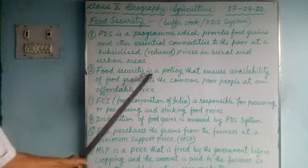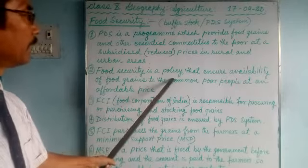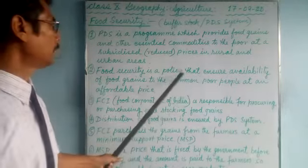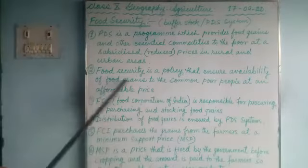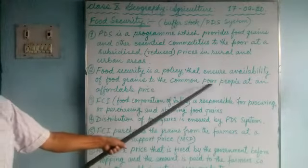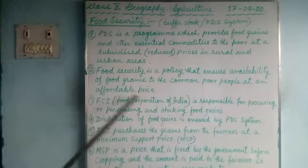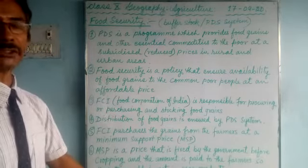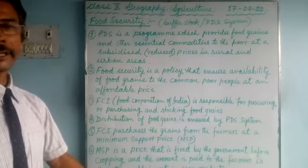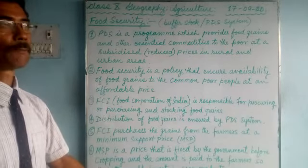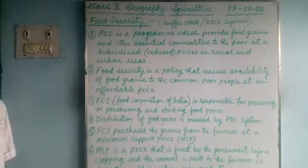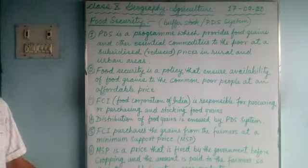Food security is a policy of the government that ensures the availability of food grains to the common poor people at an affordable, subsidized price, so that food is available even to the poorest people.